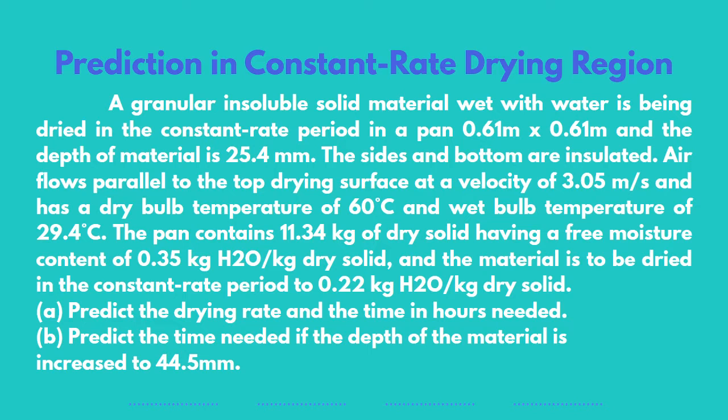The pan contains 11.34 kilograms of dry solid having a free moisture content of 0.35 kilograms water per kilogram of dry solid, and the material is to be dried in the constant rate period to 0.22 kilograms water per kilogram of dry solid. Predict the drying rate and the time in hours needed, and predict the time needed if the depth of the material is increased to 44.5 millimeters.